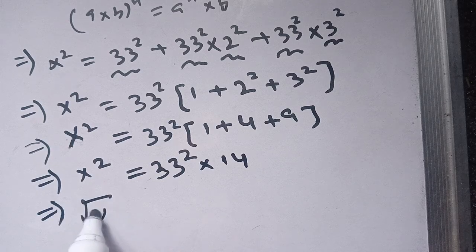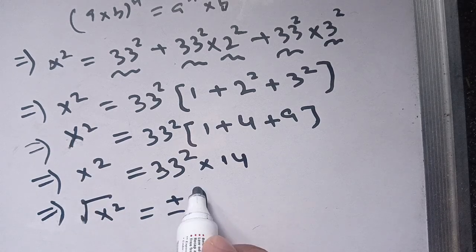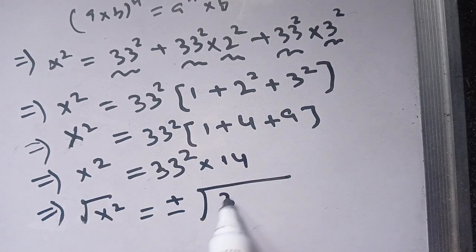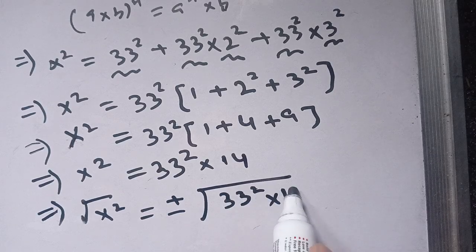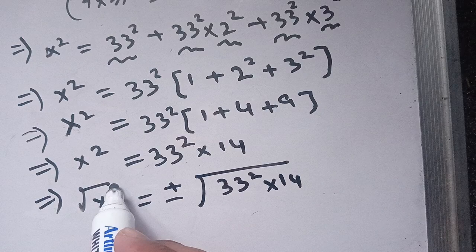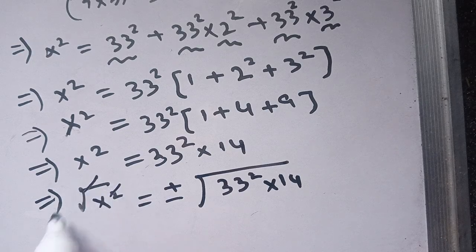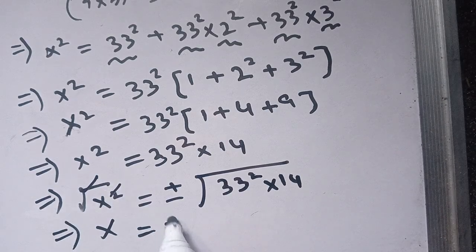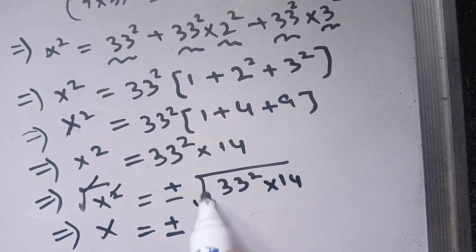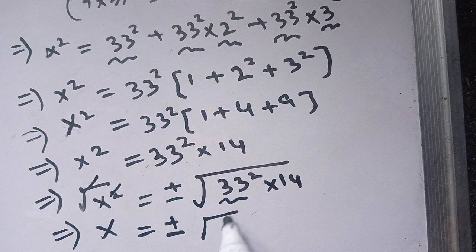Now, taking the square root on both sides, we get the square root of x squared is equal to plus or minus the square root of 33 squared times 14. We can cancel out the square by the square root, and taking individual square roots of each term, we get the square root of 33 squared times the square root of 14.